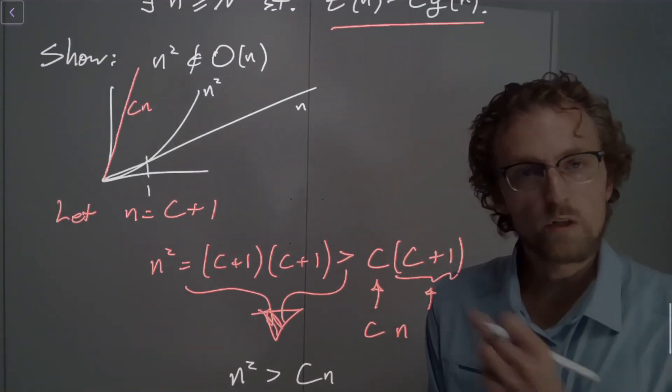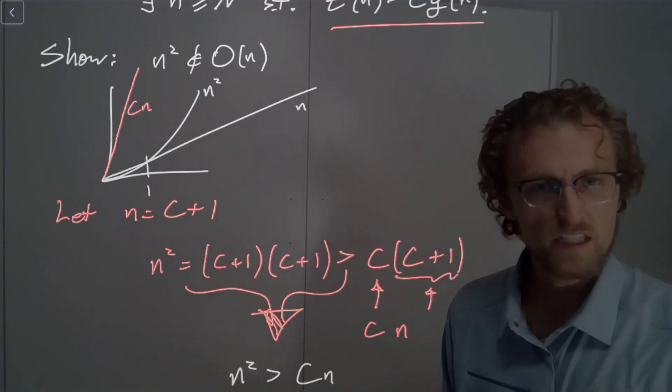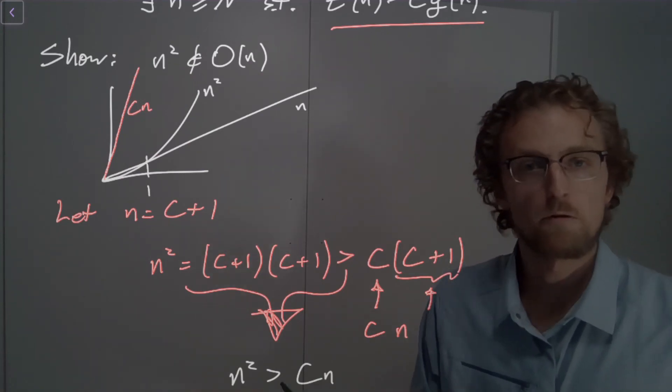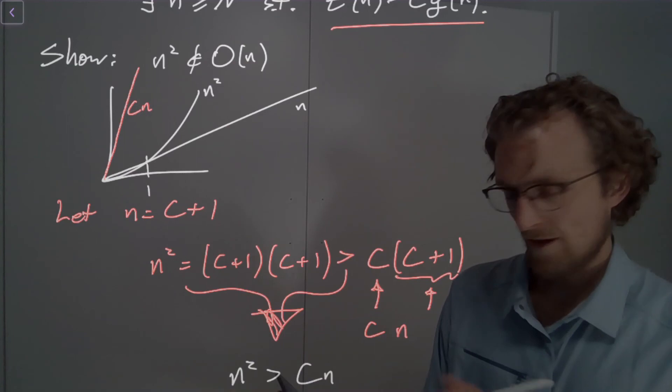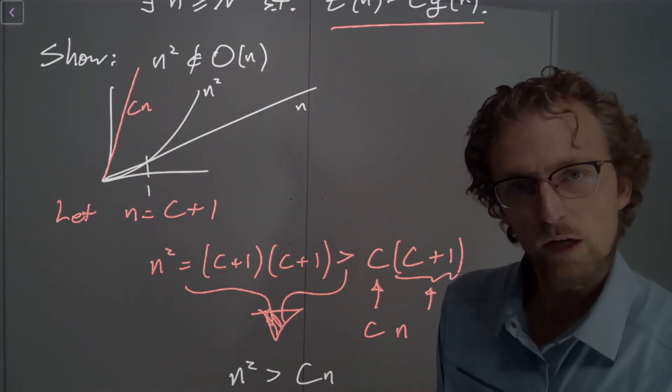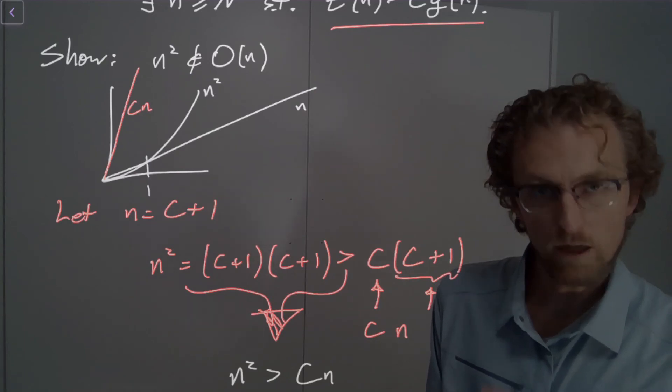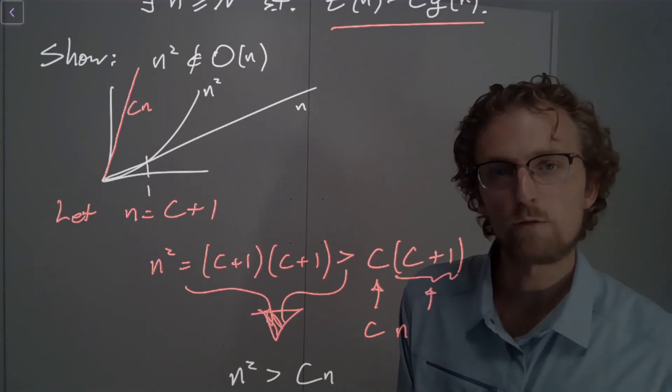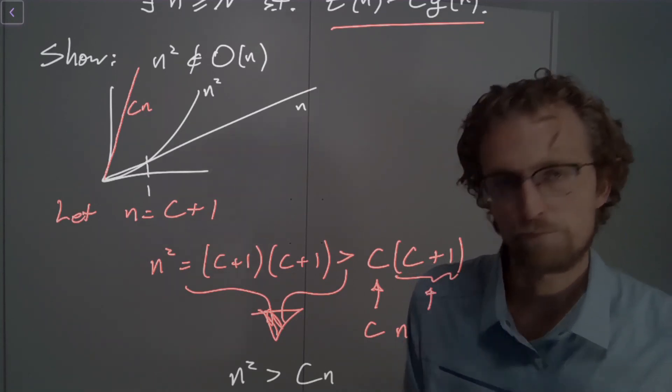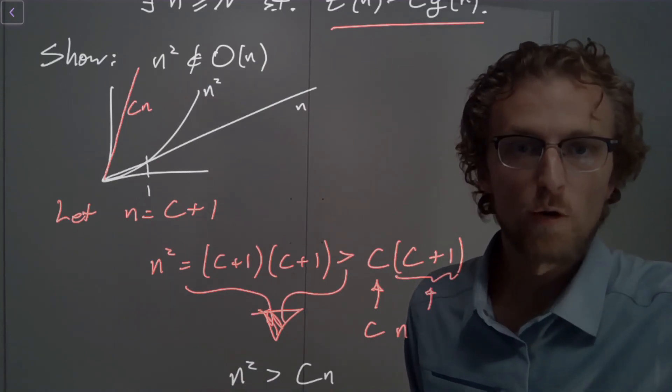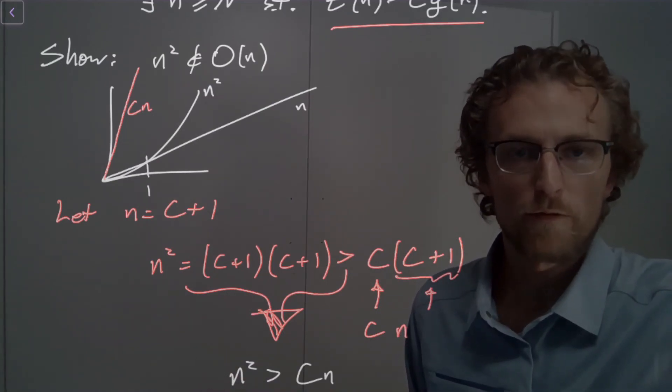So if someone comes and says, I know a huge number and I'm going to scale this thing up so that your N squared is never bigger than N, you can just say, I'll raise you a C plus one and I'll go a little bit further. And then, I can show you that there exists a point, even with that really highly scaled linear function. There exists a point somewhere out there where the quadratic function, the N squared function is greater than the linear function. And that's how you show, using the definition, that's how you show that a function is not big O of another function.